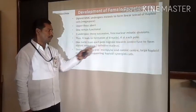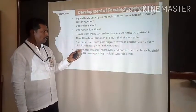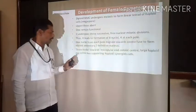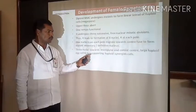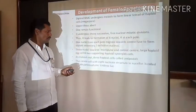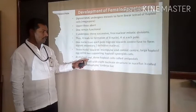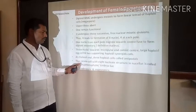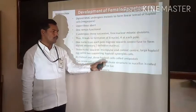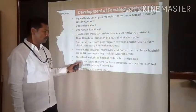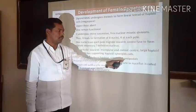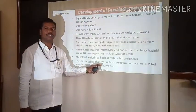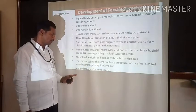The three remaining nuclei towards the micropylar end consist of one large haploid egg cell and two supporting haploid synergid cells. At the chalazal end, there are three haploid cells called antipodals. Thus, in this way, the seven-celled, eight-nucleate structure is called the female gametophyte, or embryo sac.